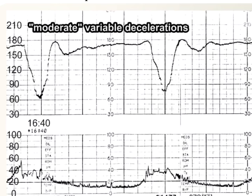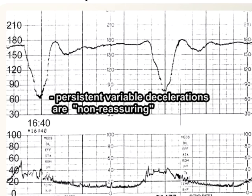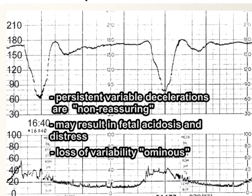Here is an example of a moderately severe variable deceleration pattern, with depth of 70 to 80 beats per minute and duration of approximately 25 to 30 seconds. A persistent variable deceleration pattern in the fetal heart tracing is a non-reassuring sign and may result in fetal acidosis and distress. This particular tracing also exhibits loss of variability. As with persistent late decelerations, loss of variability in variable deceleration patterns is an ominous sign and should prompt immediate corrective measures or delivery.